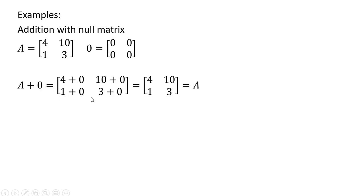Let's do some examples. Addition with a null matrix: Matrix A, we're going to add to it the null matrix, and what we get back is just matrix A. The original matrix is unchanged when adding a null matrix to it.